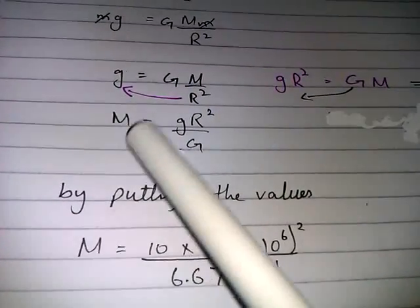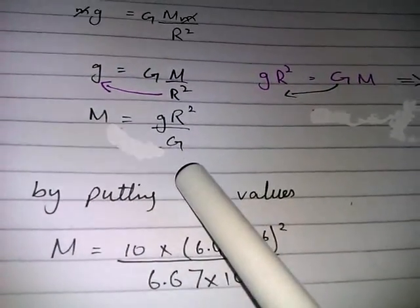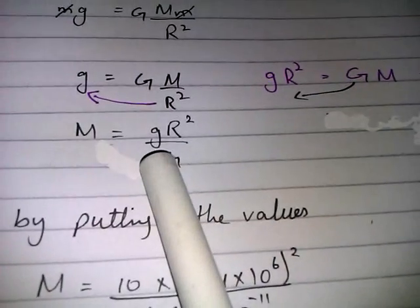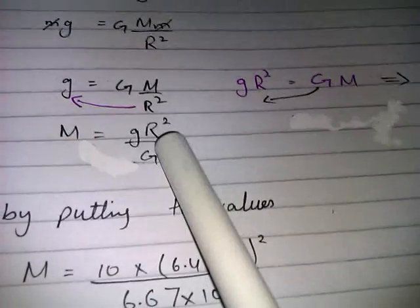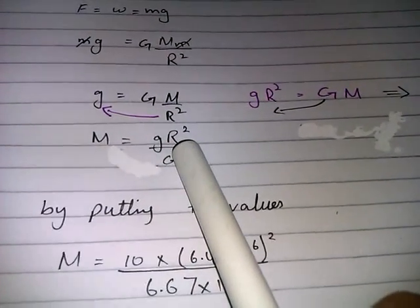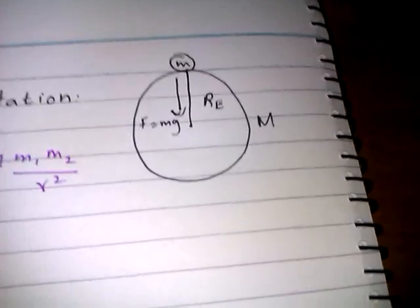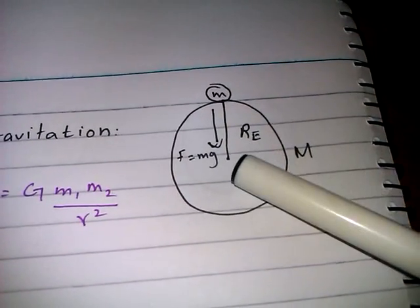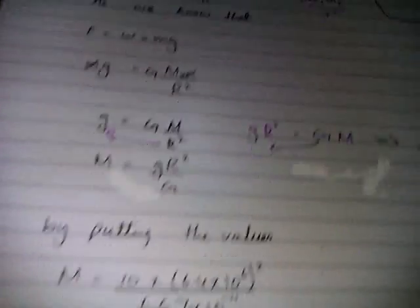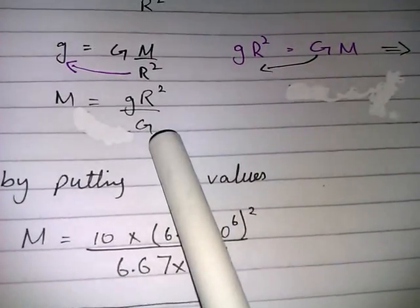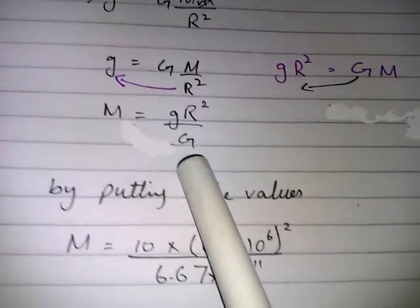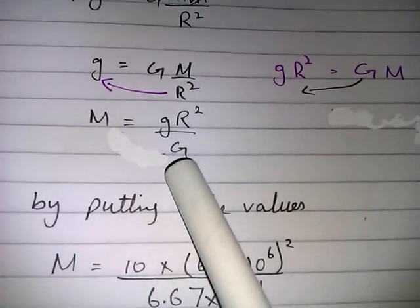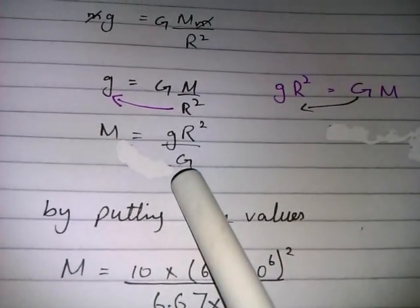Now mass is equal to gR squared by G. Over here small g is the gravitational acceleration of the Earth. R squared is the radius of the Earth which is the distance between the two bodies. And capital G is the gravitational constant which never changes in this whole universe which is equal to 6.67 into 10 raised to the power of minus 11.